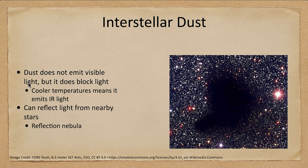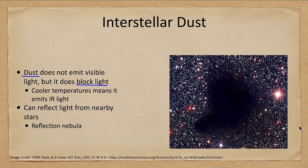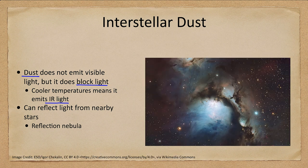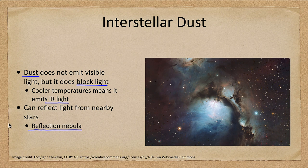Now let's look at the interstellar dust. Dust does not emit visible light but it does block light — we see here a nebula blocking out the light from stars behind it. There are certainly just as many stars behind this dust cloud as elsewhere, but we can't see them because of the dust. What the dust does do is emit infrared light, which allows us to penetrate it. It can also reflect light from nearby stars, producing blue reflection nebulae. A reflection nebula occurs when light from stars is scattered off dust particles, which are much better at scattering short-wavelength blue light than longer wavelengths.